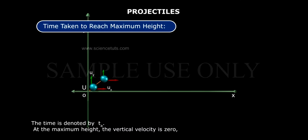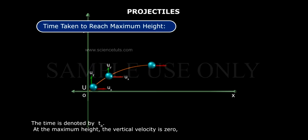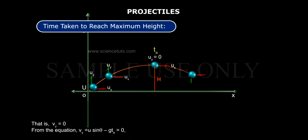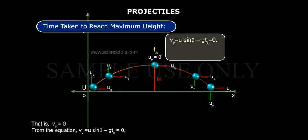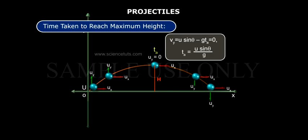Time taken to reach maximum height is denoted by T_A. At the maximum height, the vertical velocity is zero, that is V_y = 0. From the equation V_y = U sinθ − g·T_A = 0, we get T_A = U sinθ / g.